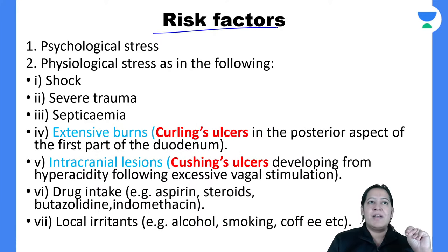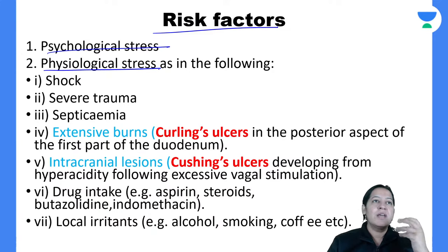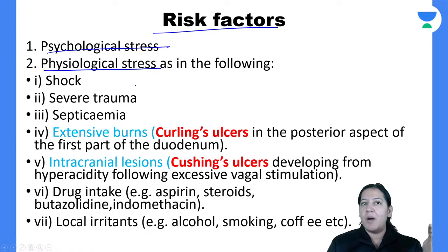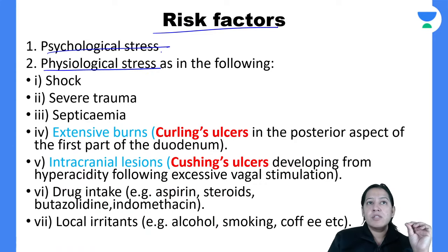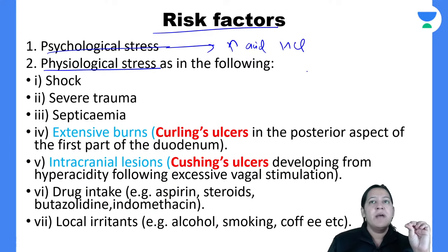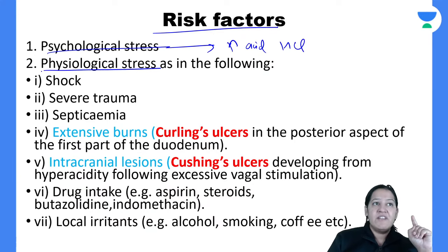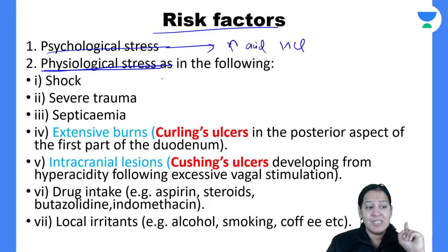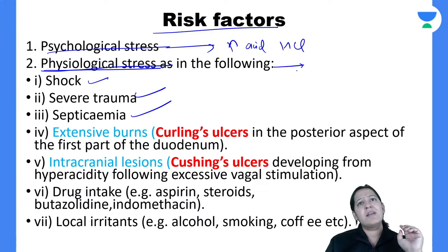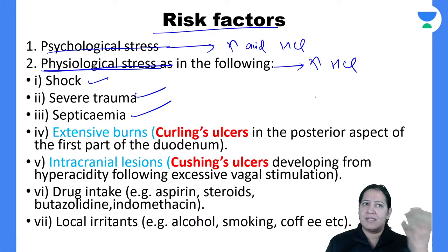What are the risk factors for peptic ulcer? There are two types of stress — one is psychological stress and one is physiological stress. Type A personalities or people under exam stress have psychological stress, which causes increased HCL secretion in the stomach and duodenum, leading to a breach in the mucosa and thus ulcer formation. Physiological stress means shock, trauma, septicemia, or severe surgery. In these conditions also there is increased HCL secretion, leading to ulcer.